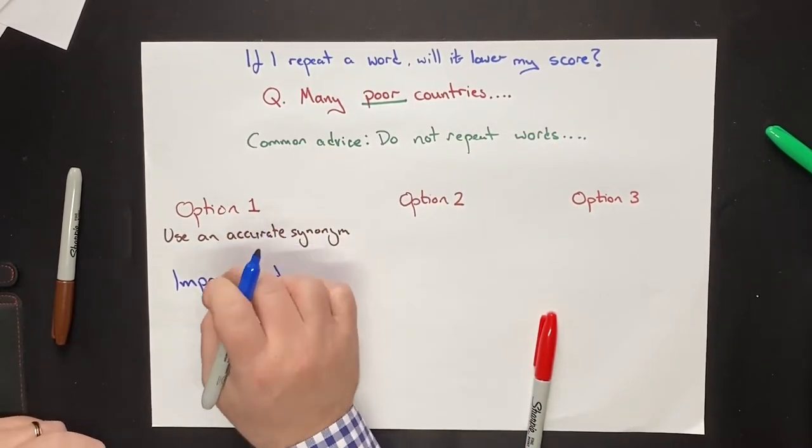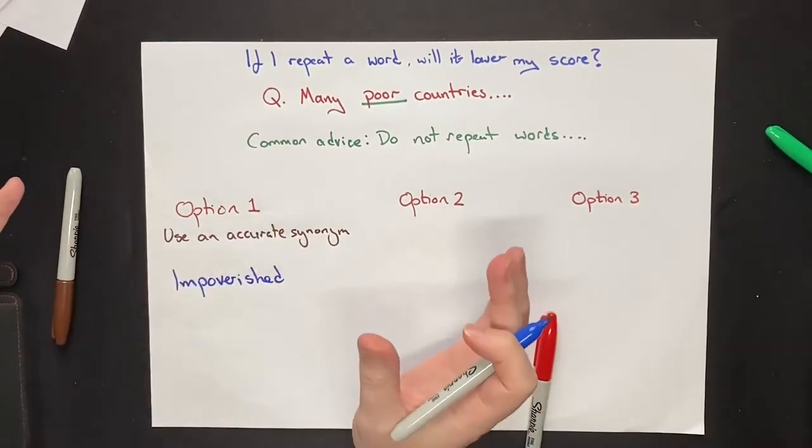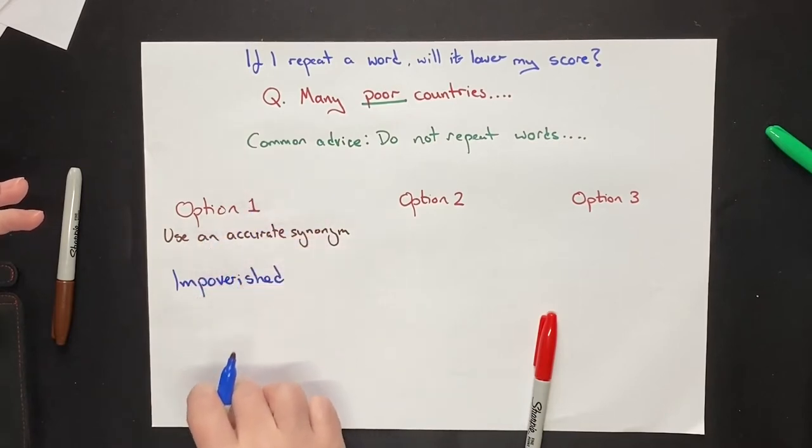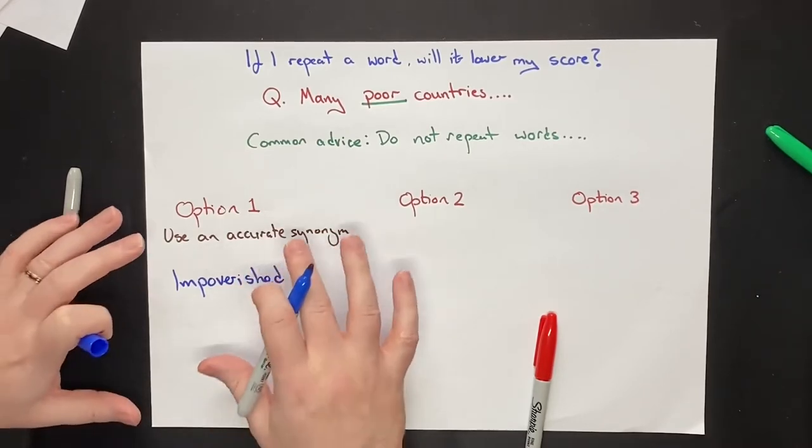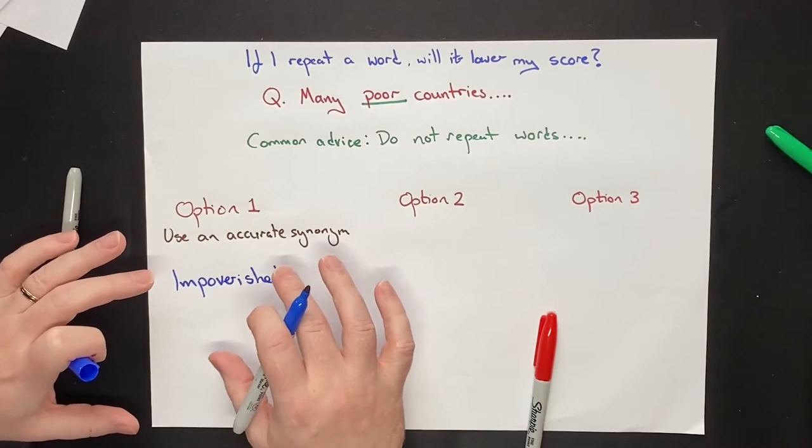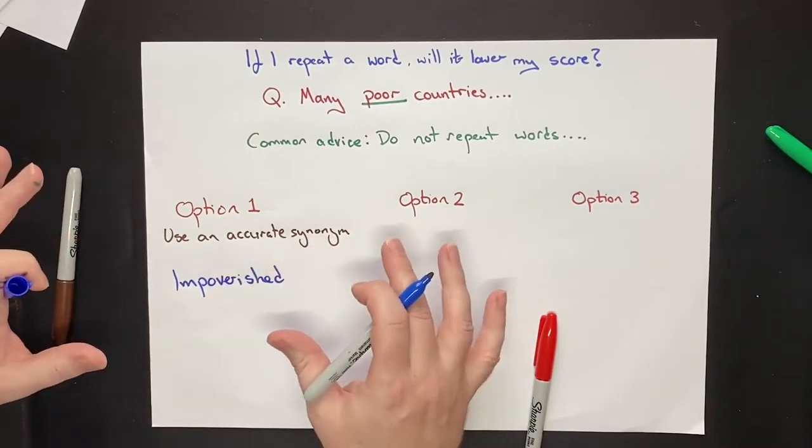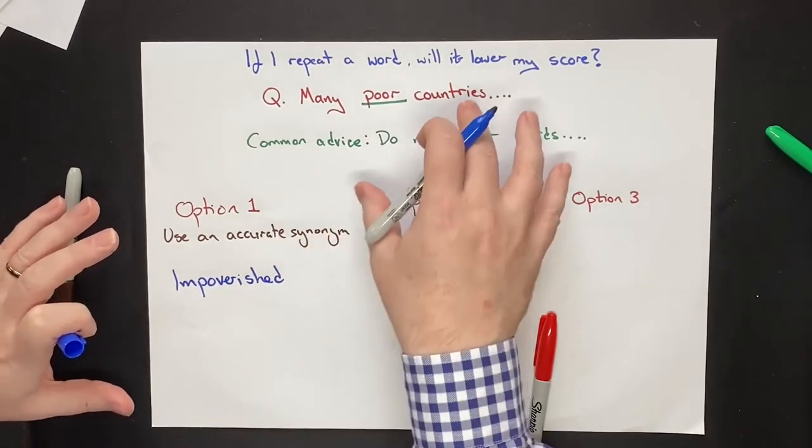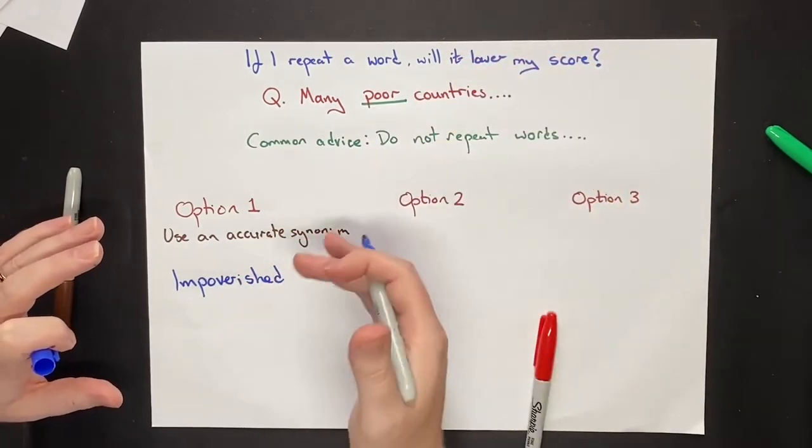The problem with option one is that most students don't have a wide enough range of vocabulary in order to do this many times throughout the essay. And that in itself is not a huge problem. Most of the students that we work with don't have a problem so much with the range of vocabulary that they have. What most people have a problem with is understanding what improves your score and what actually lowers your score.